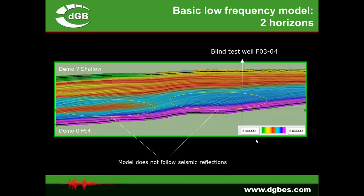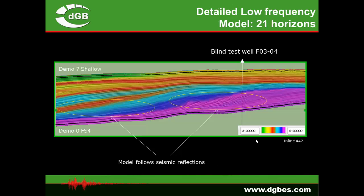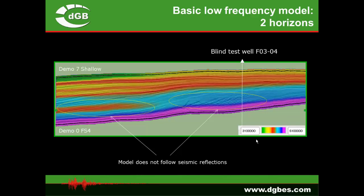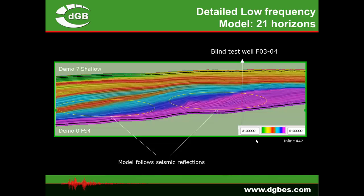The first low frequency model — interpolated between top and base horizon only — shows a mismatch in zones where the model does not adhere to the seismic reflection patterns. In contrast, the model built with many horizons from the HorizonCube closely follows the reflection patterns. Comparing the two horizon model against the many horizon model side by side clearly shows the difference in how well each adheres to the geology.